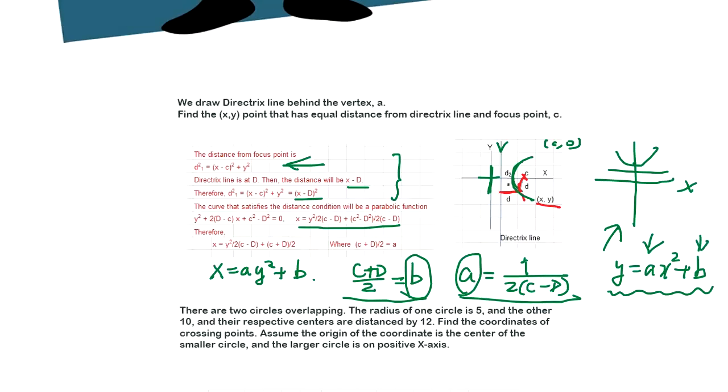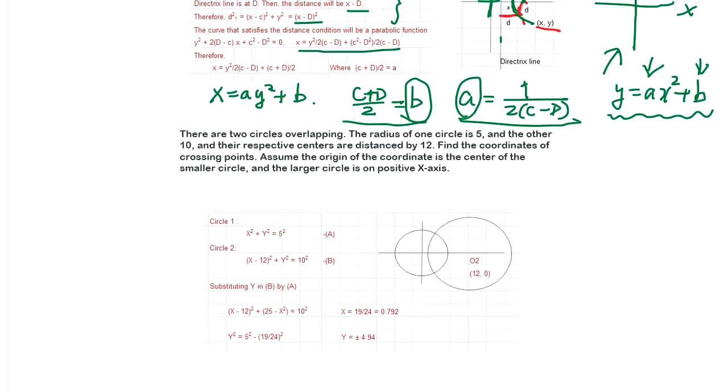Now if you orient the parabolic function this way, then of course it's going to be ax² + b, right? So this coordinate helps to find out the relationship between parabolic function coefficients and the position of the focus point and directrix line. Next one: there are two circles overlapping. The radius of the circle is 5 and 10 respectively, and their centers are distanced at 12.